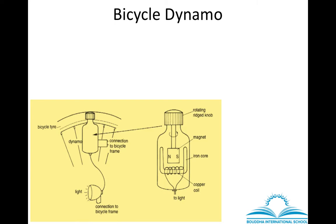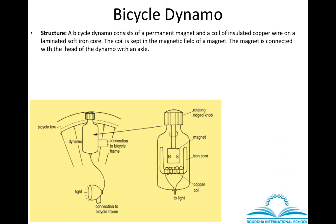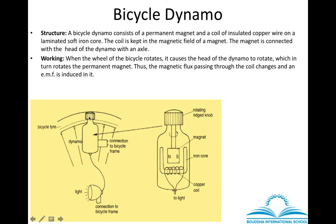Now, bicycle dynamo. Since it is a dynamo, it is a source of electricity — it converts mechanical energy into electric energy. This is the structure of bicycle dynamo. Internally it consists of one permanent magnet, and near the permanent magnet a coil of insulated wire is kept. The magnet is connected to the head of the dynamo, and this head is kept joined with the bicycle wheel.